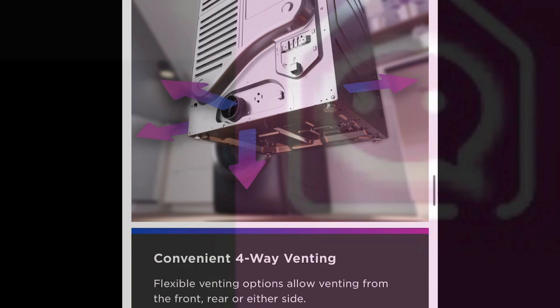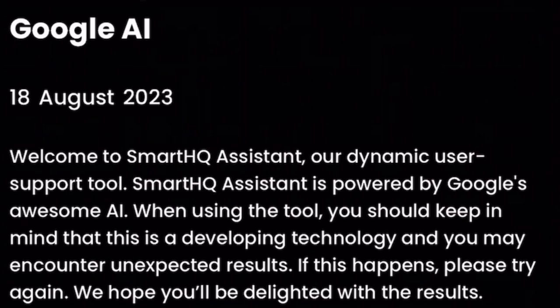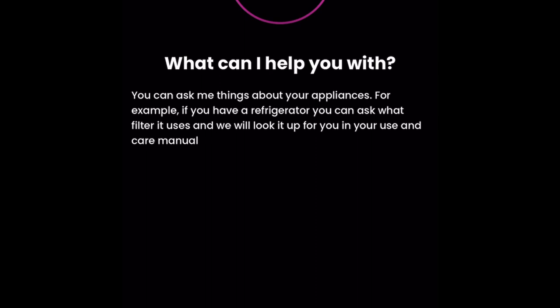The final section of the SmartHQ app that I would like to review with everyone is the SmartHQ Assistant. It is powered by Google's AI. This icon is on your homepage. This AI is a developing technology like all AIs, and a disclaimer was released on August 18, 2023, that it's still developing and you may encounter unexpected results. But try, try again everyone. Let's just admit we're in 2023 going into 2024 — AI technology is here. It's an advancement and I think it's a good thing.